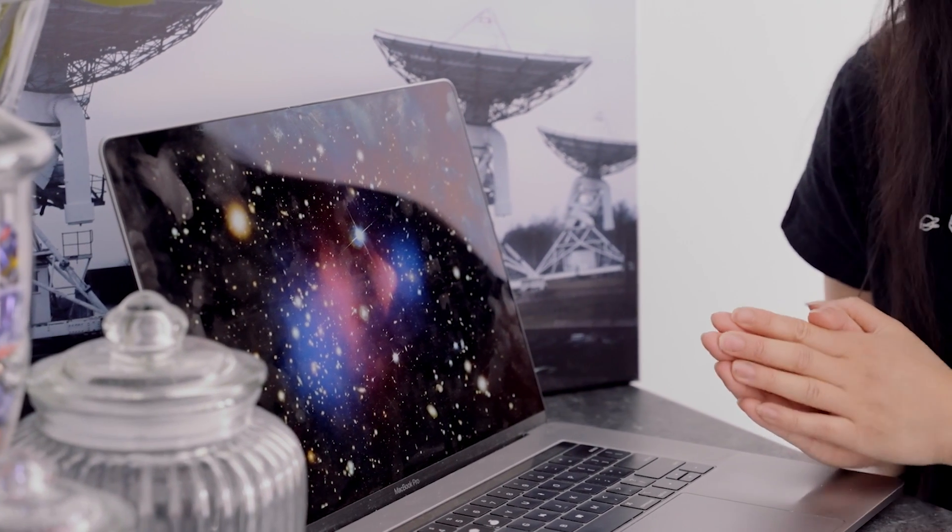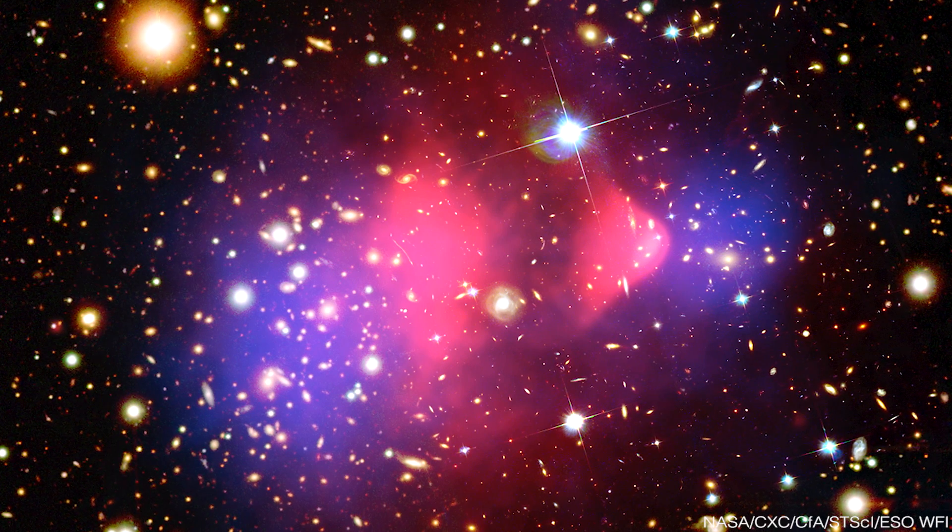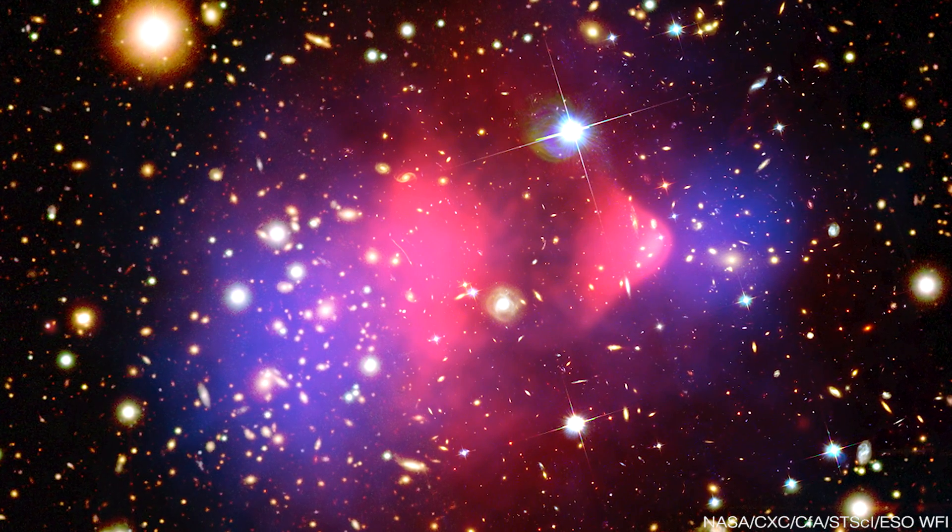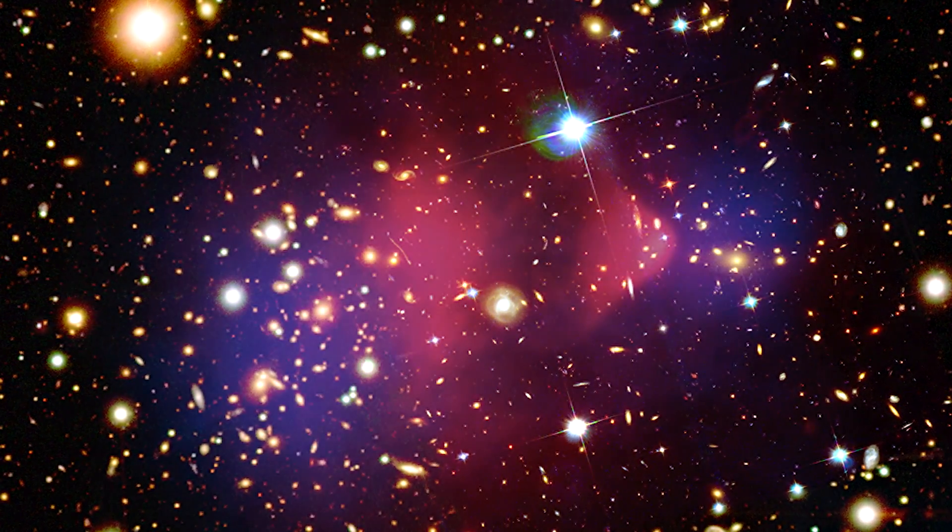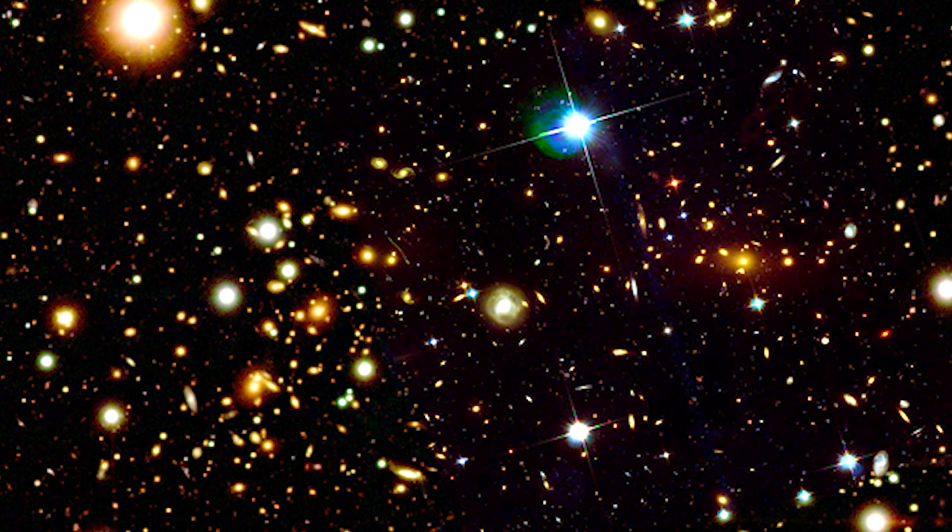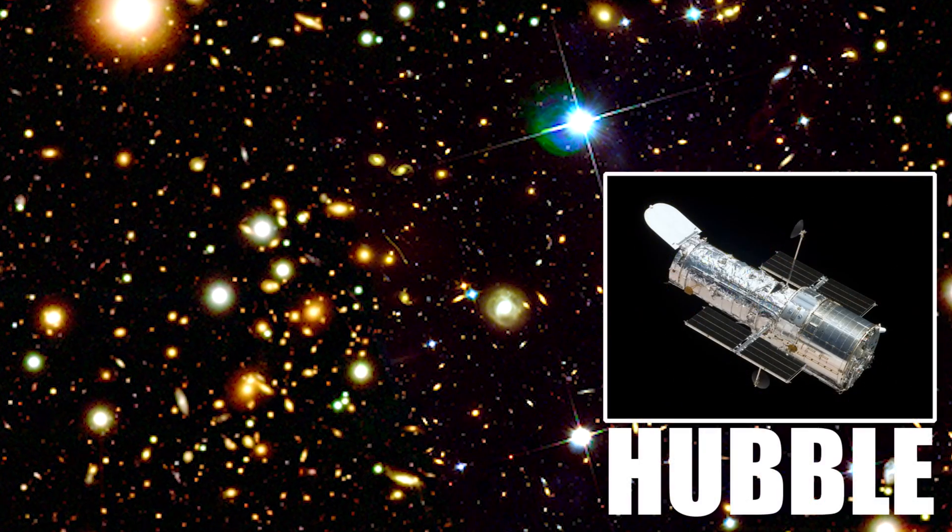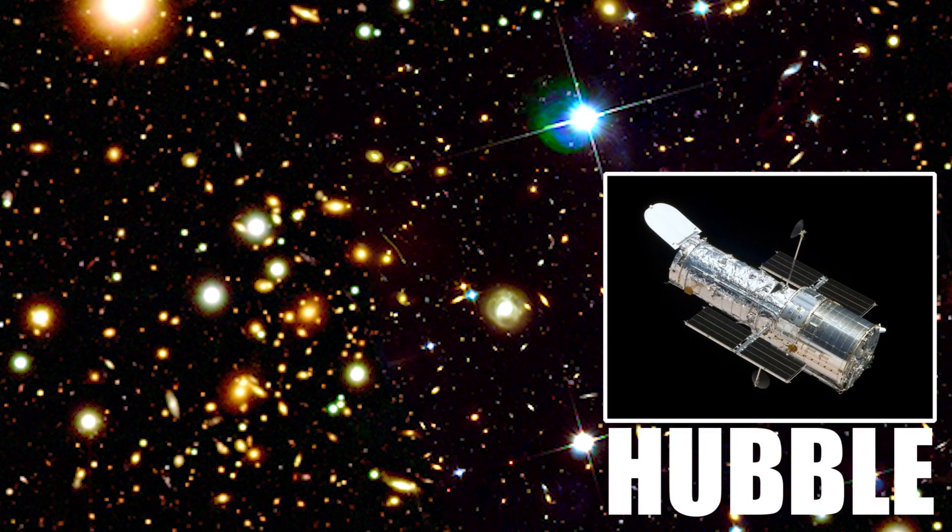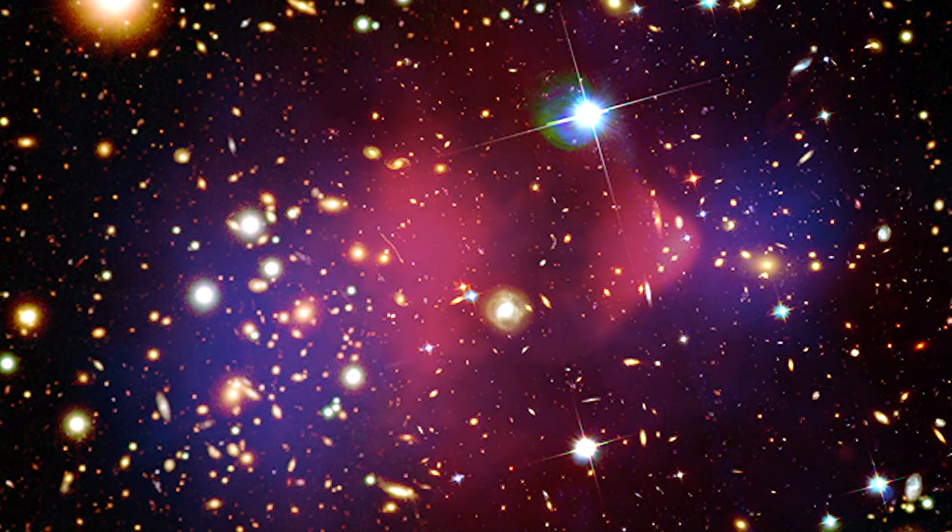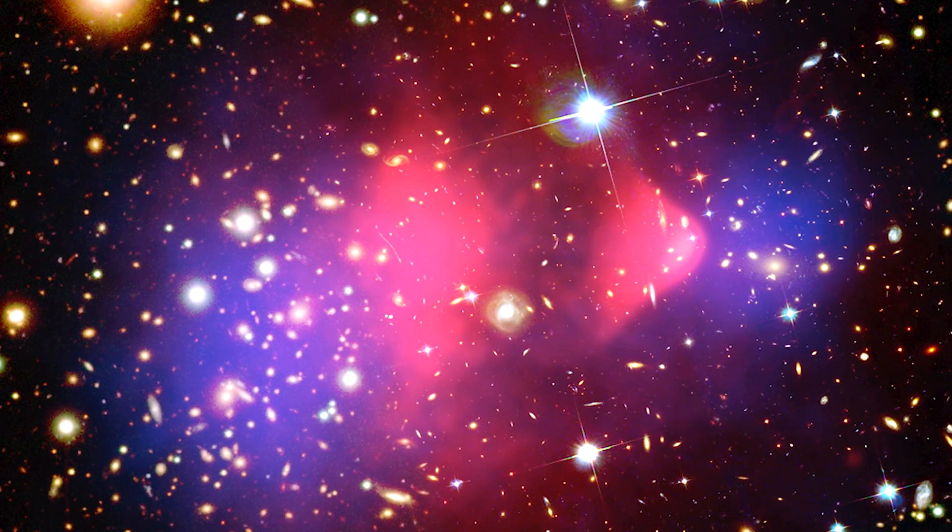This is one of my favorite pictures. It's the bullet cluster. It's not a single image, but a composite of many images. You can see stars and galaxies taken by the Hubble Space Telescope. This is optical and infrared light, very high resolution stars and galaxies.